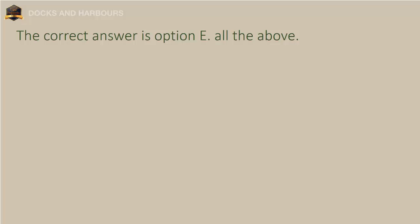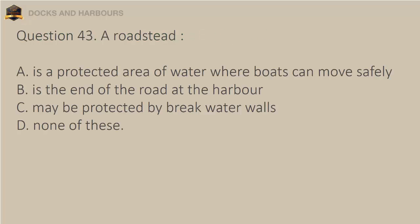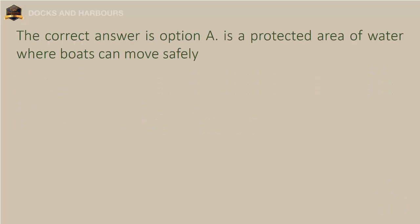Question 43. A roadstead: a. Is a protected area of water where boats can move safely. b. Is the end of the road at the harbor. c. May be protected by breakwater walls. d. None of these. The correct answer is option A: Is a protected area of water where boats can move safely.